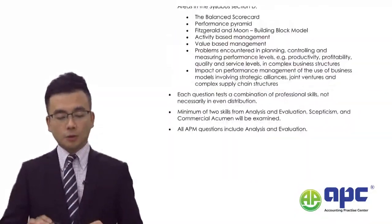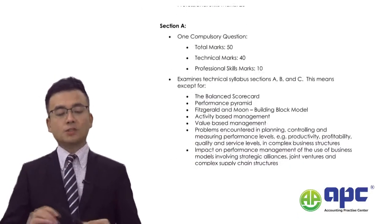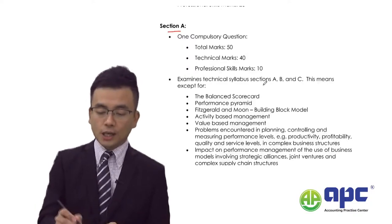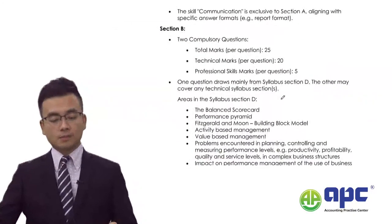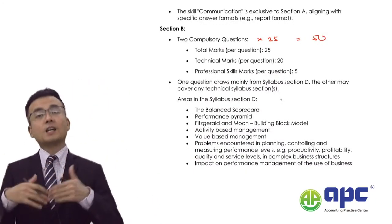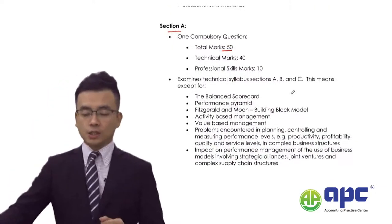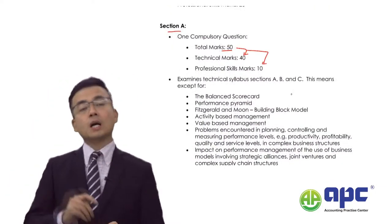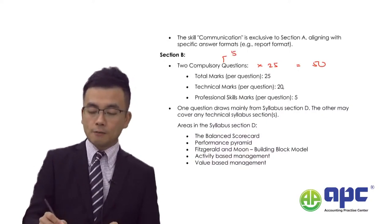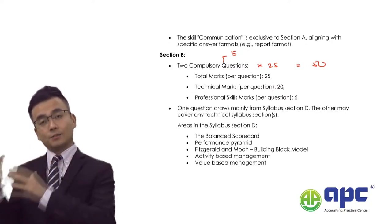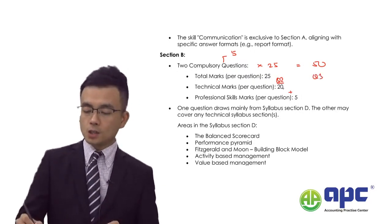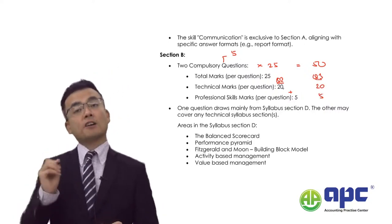There will be professional marks, but before we dip into that, let's look at the exam itself. The exam contains three questions. Section A is a 50-mark question. Section B has two 25-mark questions — so 50 plus 50 equals 100. Within Section A, 50 marks are divided into 40 technical and 10 professional marks. In Section B, each question has 5 professional marks — question 2 will be 20 technical and 5 professional marks, and question 3 will be 20 technical and 5 professional marks.